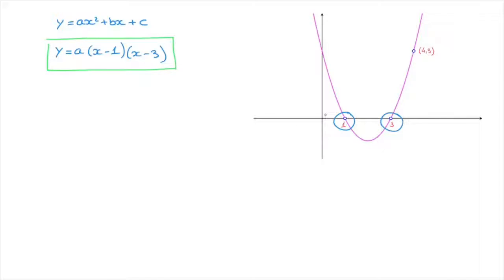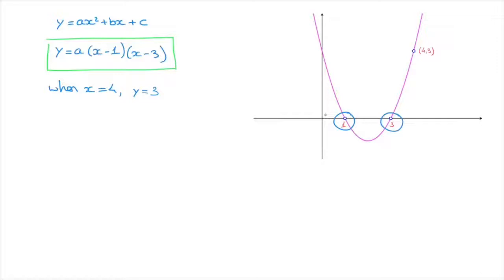To find the coefficient a, all we need are the coordinates of one other point through which the curve passes. In this case, we're given that other point. The fact that this parabola passes through that point allows us to state the following: when x equals four, y must equal three. So to find the coefficient a, we replace the two x-values in the equation by four, and we replace y by three.